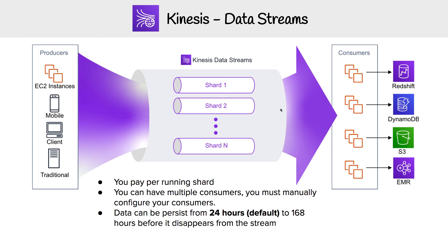The way you pay for Kinesis Data Streams is like spinning up an EC2 instance, except you're spinning up shards — and that's what drives the cost. As long as the shards are running, you pay a set amount for however many shards you have. And that is Kinesis Data Streams.